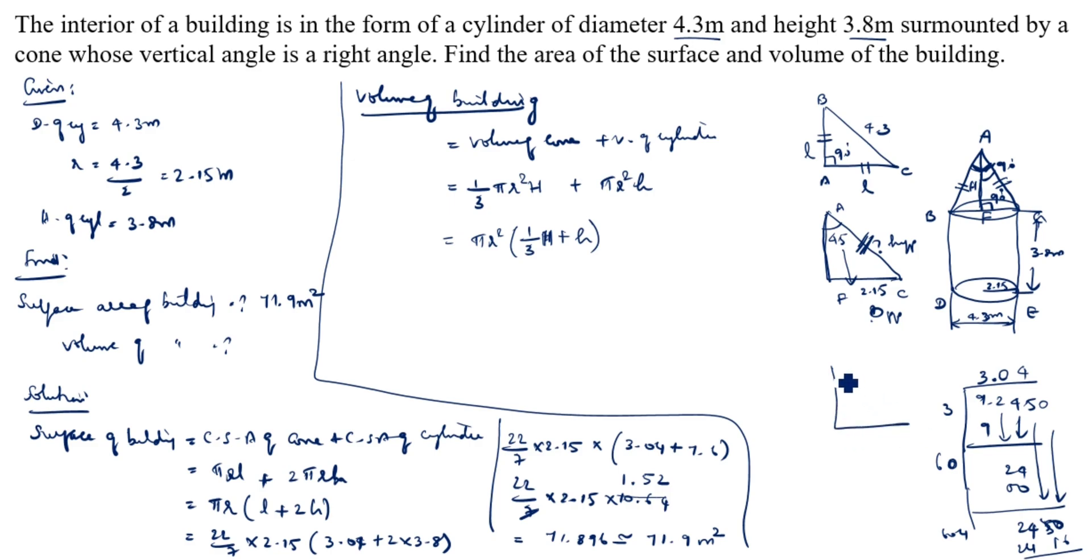Again we will draw the triangle, 45 degree. This value we do not know. This one we know: 2.15 meter, A, F, C. Opposite by this one is adjacent. What is opposite by adjacent? Tan 45 degrees equal to opposite by adjacent is h. Tan 45 is 1 is equal to 2.15 by h. H is equal to 2.15 meter. H value we know: 2.15.